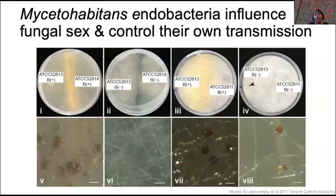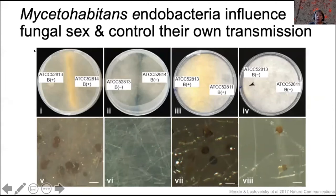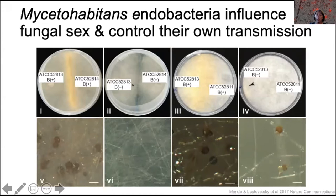A graduate student in our lab, Stephen Mondo, became interested in whether these endosymbionts also control sexual reproduction of the fungus. It turns out that yes, they do — they control it completely. Removal of bacteria from compatible mates either completely obliterates their ability to mate. This plate shows successful mating between compatible mates of rhizopus microsporus. This plate illustrates mating between partners that were cured, and you can see that there is no mating.